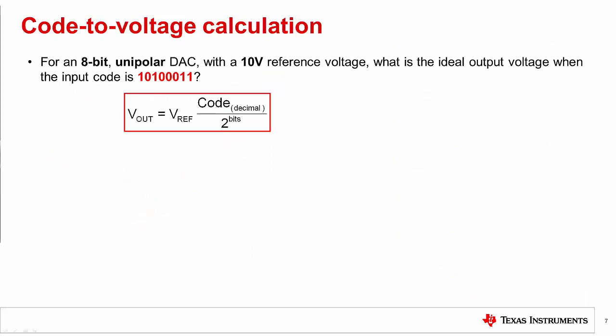Now that we've finished up with the definitions, let's look at the calculation to convert from our input code to our output voltage. For an 8-bit unipolar DAC with a 10-volt reference, what is the ideal output voltage when the input code is 1010011? Let's take a look at our equation. Here we see that Vout is equal to the V reference times the code divided by the total number of codes, or 2 to the number of bits in the system.